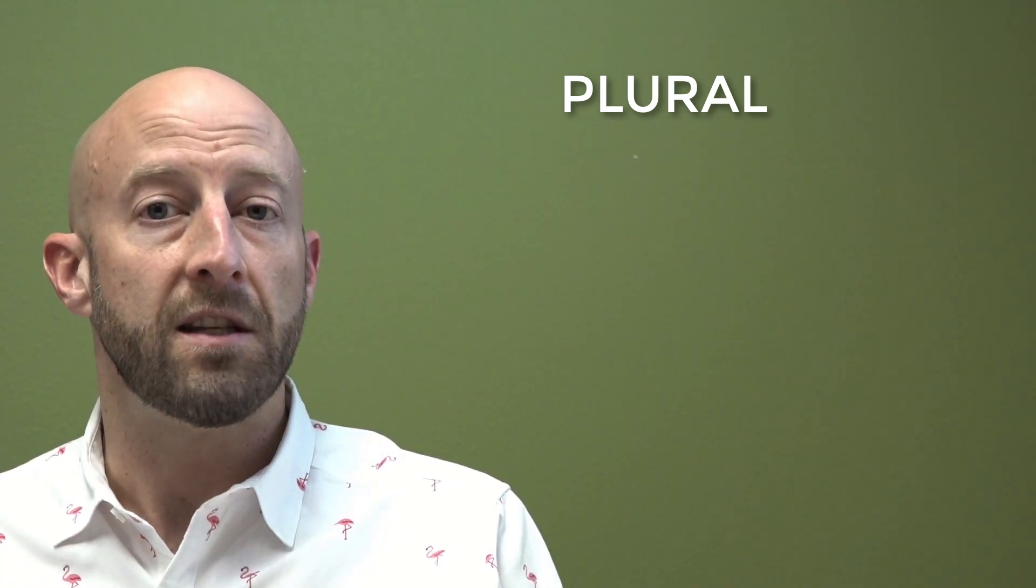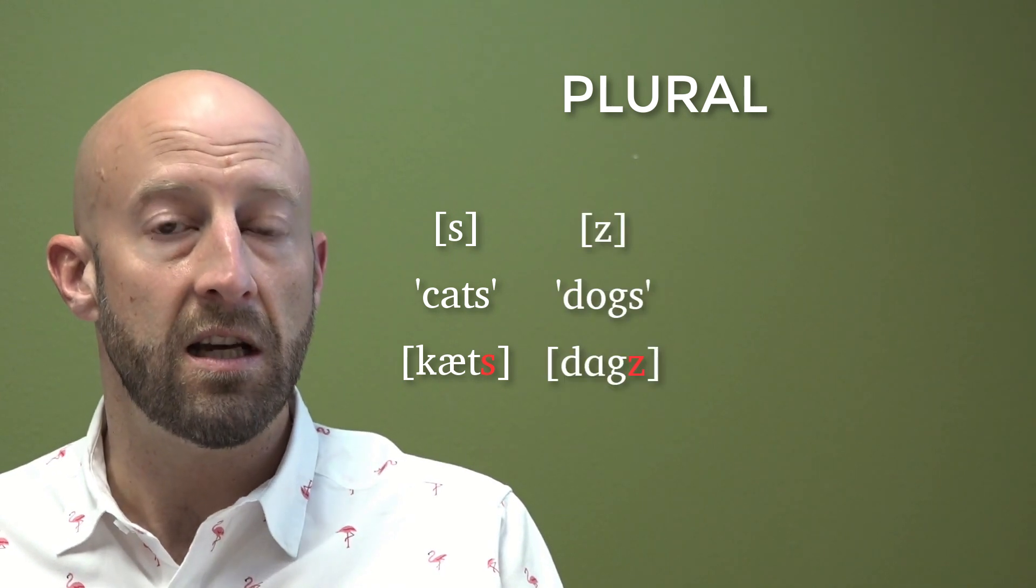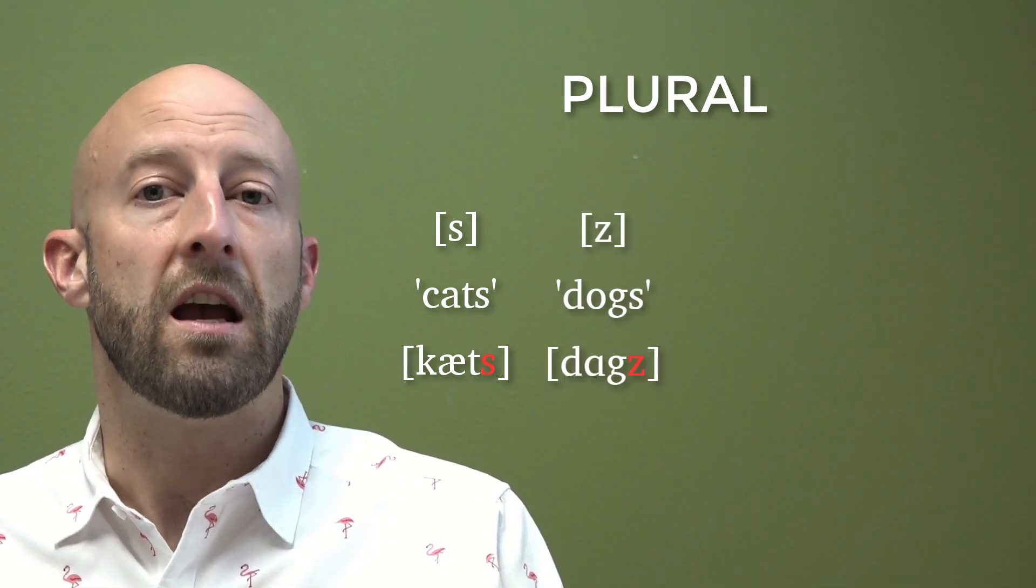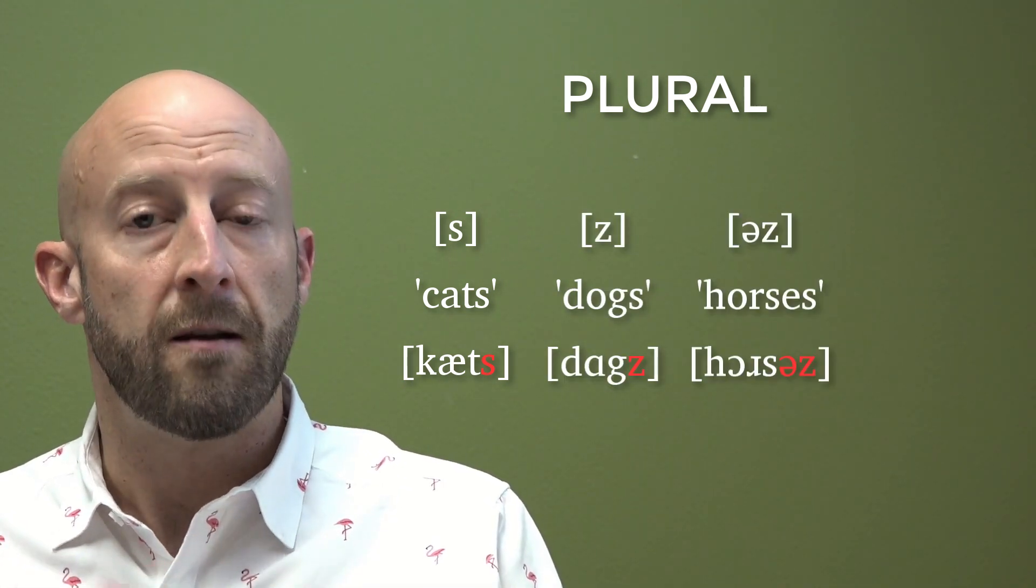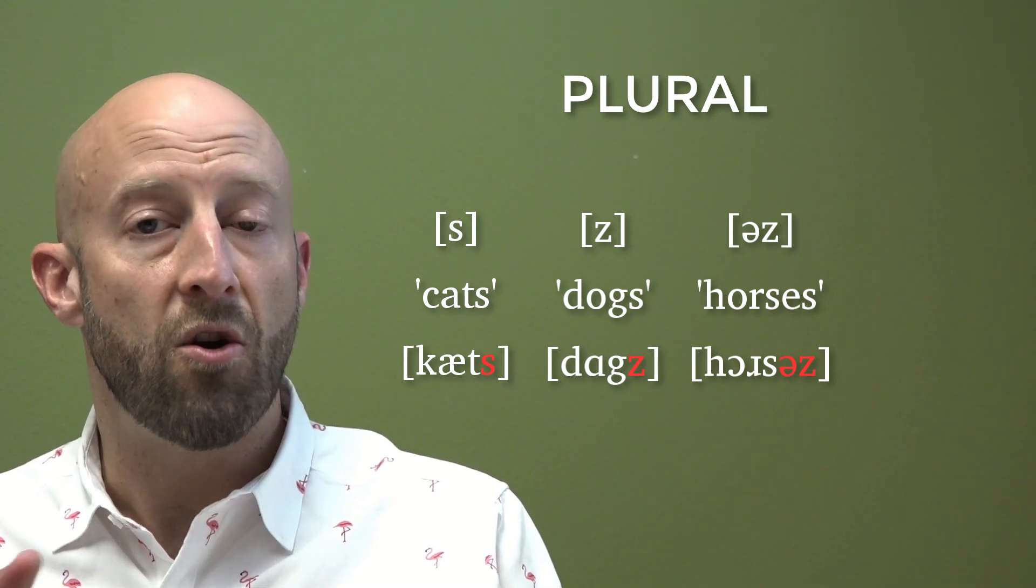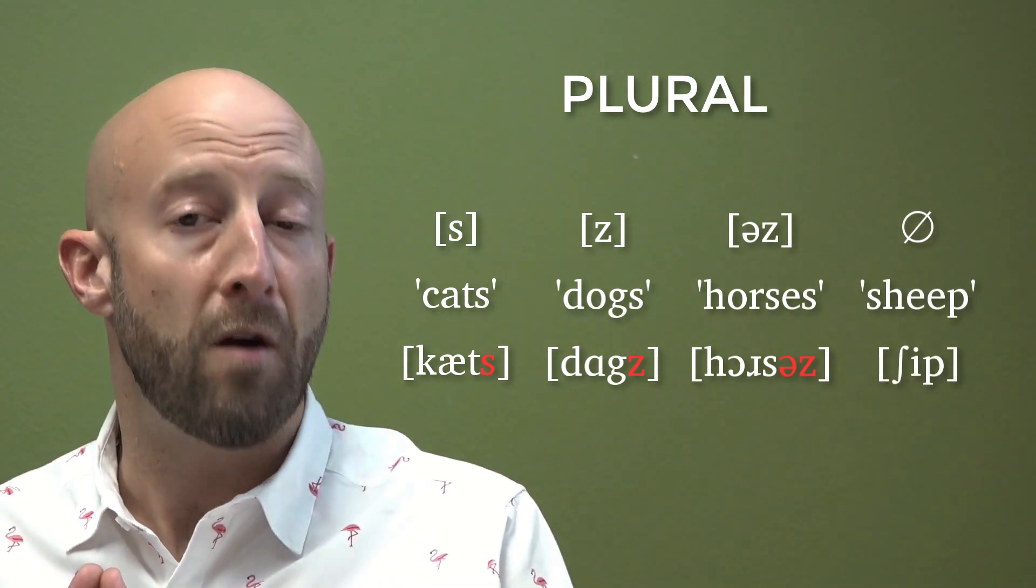So we have /s/ as in cats, we have /z/ as in dogs, and we have /əz/ as in horses, and lastly we have the zero morph. Now there are others, but let's just stick with these four for now.